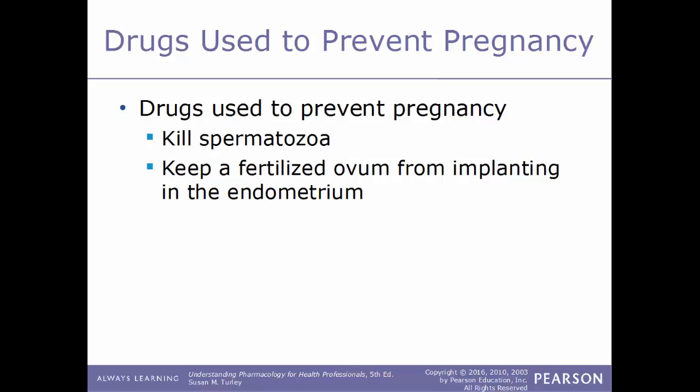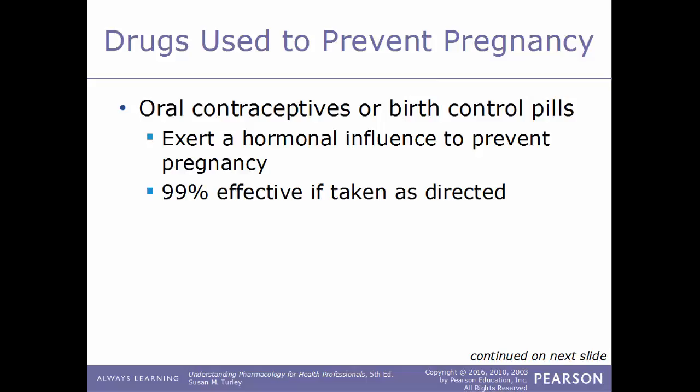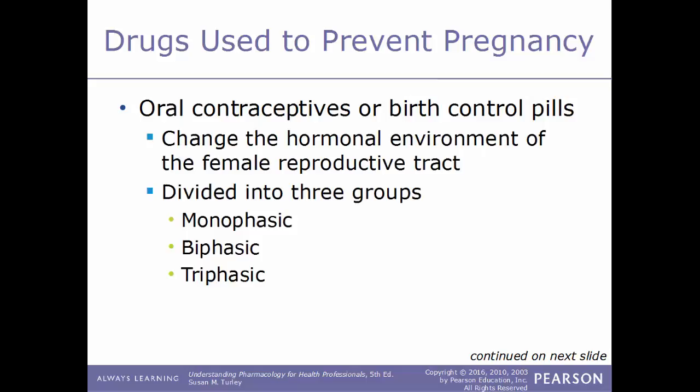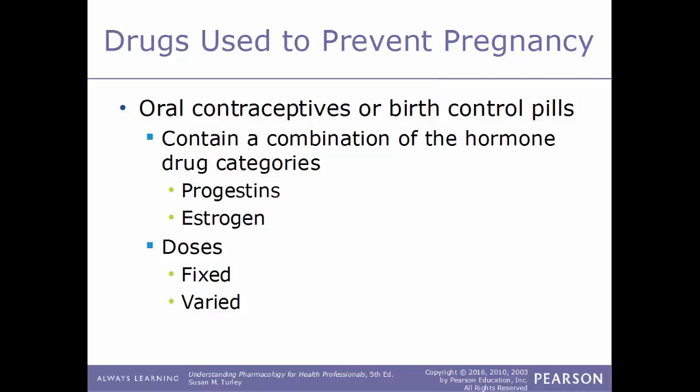The first kind of drug we'll talk about are oral contraceptives, or birth control pills. These exert a hormonal influence to prevent pregnancy and are 99% effective if taken as directed. They act by changing the hormonal environment of the female reproductive tract. These are divided into one of three groups: monophasic, biphasic, and triphasic. Birth control pills contain a combination of progestins and estrogen, and the doses can either be fixed or varied.